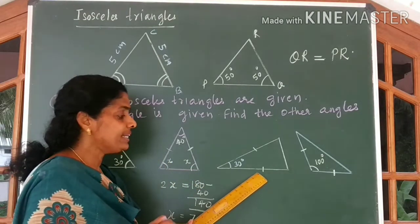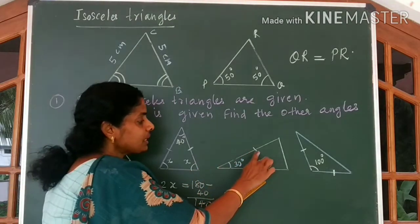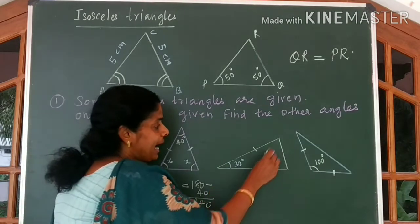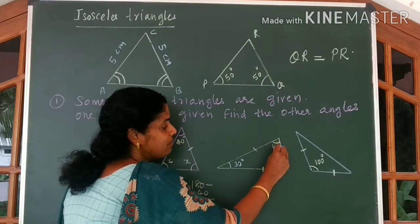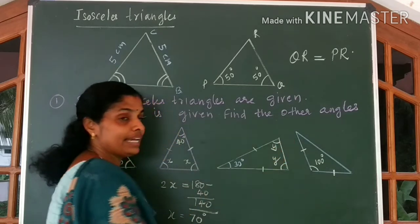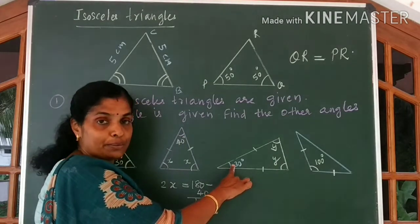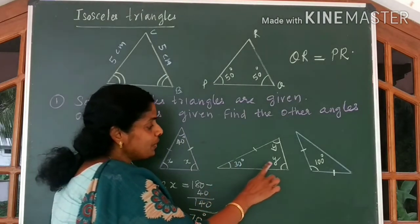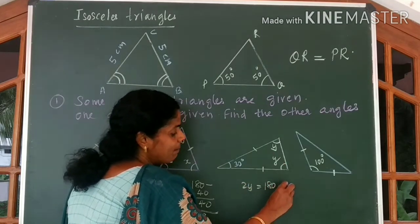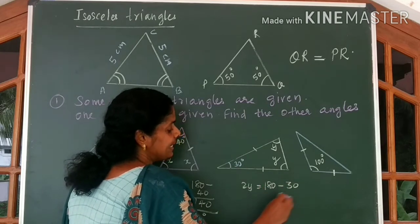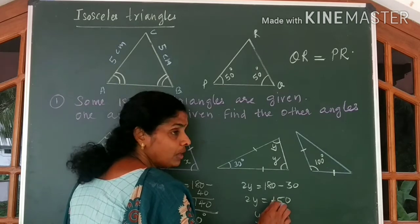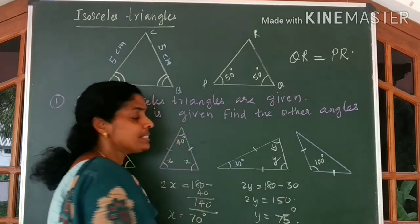Look at the third figure. Same idea. These two sides are equal. So let me name the angles opposite to them as Y. We know one angle to be 130 degrees. So Y plus Y, that is 2Y, equals 180 minus 130, which is 50 degrees. So Y equals 50 divided by 2, which is 25 degrees.